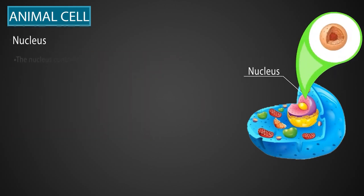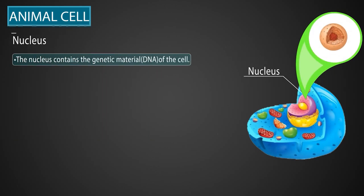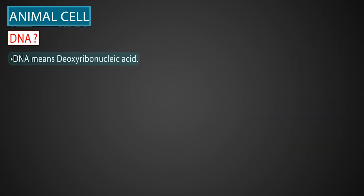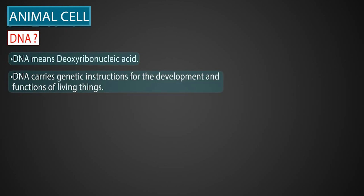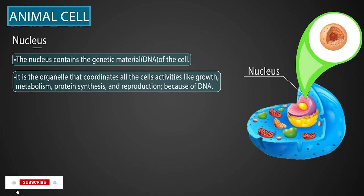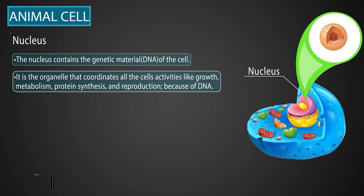Nucleus. The nucleus contains the genetic material, that is the DNA of the cell. DNA means deoxyribonucleic acid. It carries genetic instructions for the development and function of living things. The nucleus is the organelle that coordinates all the cell activities, like growth, metabolism, protein synthesis, and reproduction, because all the information regarding the coordination of all the cell activities lies in the DNA.